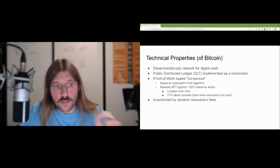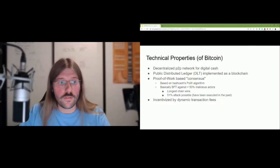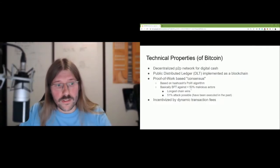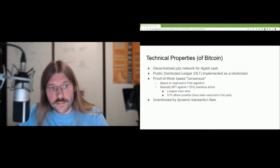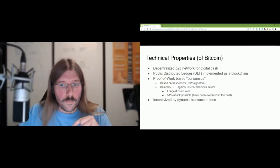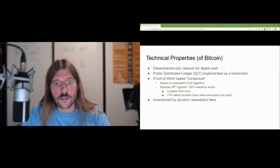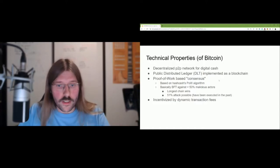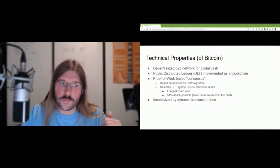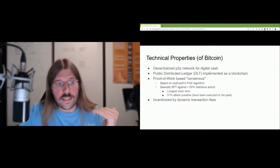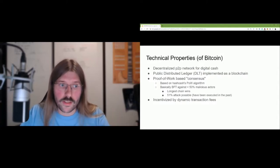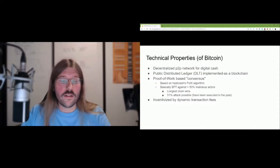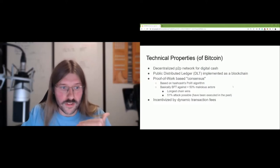Bitcoin has some Byzantine fault-tolerant properties. Byzantine fault tolerance is a property for distributed systems that says a certain group of actors or nodes in a network can be malicious or faulty, and the network is still able to reach valid consensus. Because Bitcoin uses a proof-of-work-based consensus algorithm, it has a very good Byzantine fault tolerance threshold — basically less than 50% of actors can be malicious and the network can still reach valid consensus. But it is still attackable — you can manipulate the Bitcoin network by controlling more than 50% of the network, which is still possible in reality.